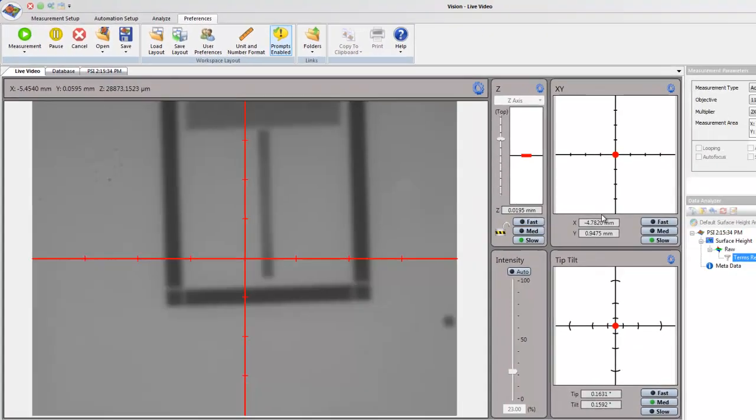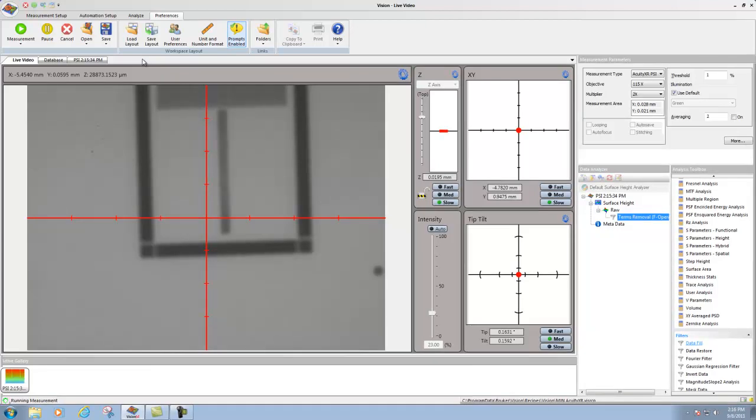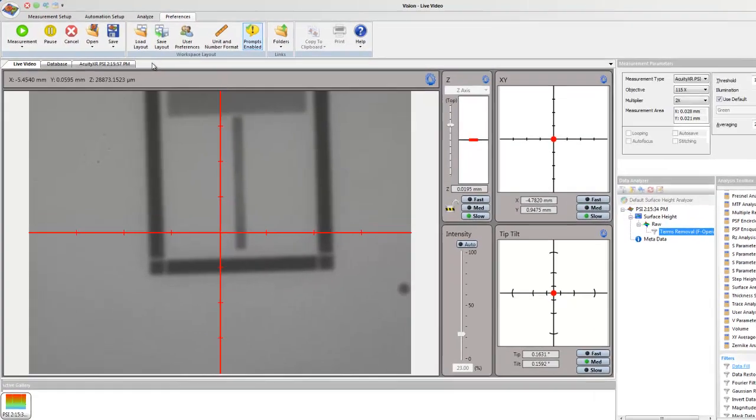We make multiple measurements of the sample and we allow the computer to do some processing. And then very quickly we'll be able to take a look at this result.